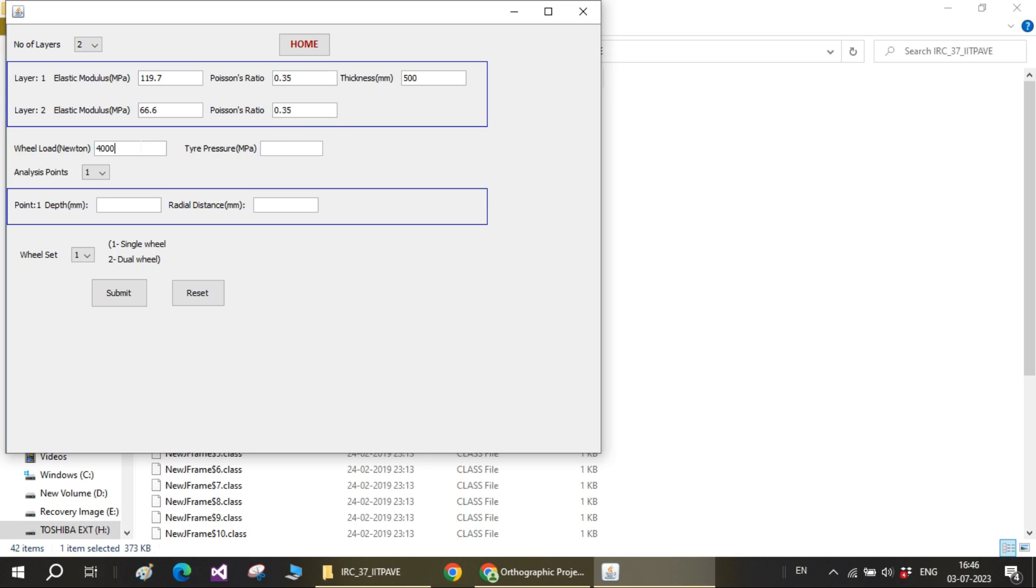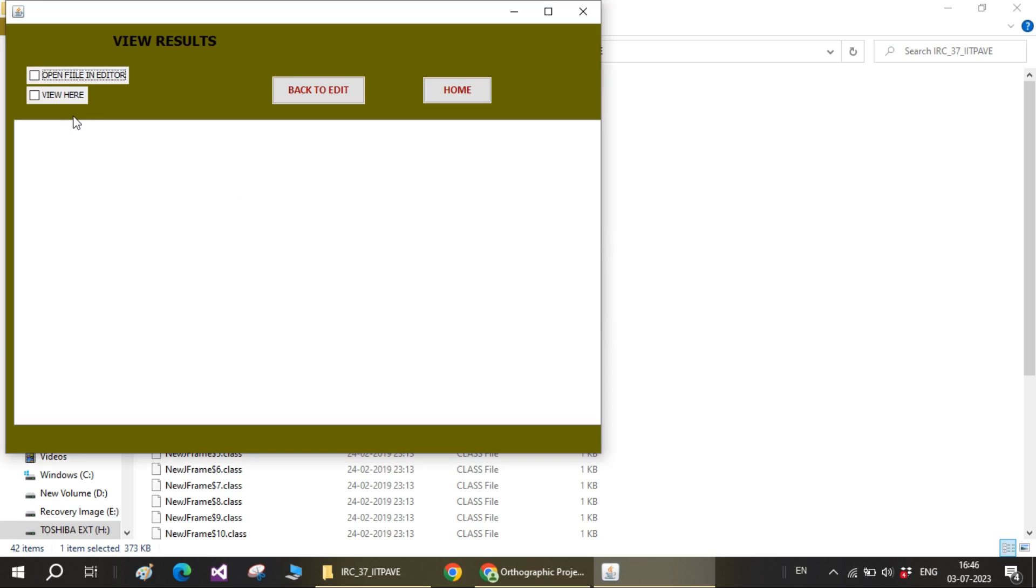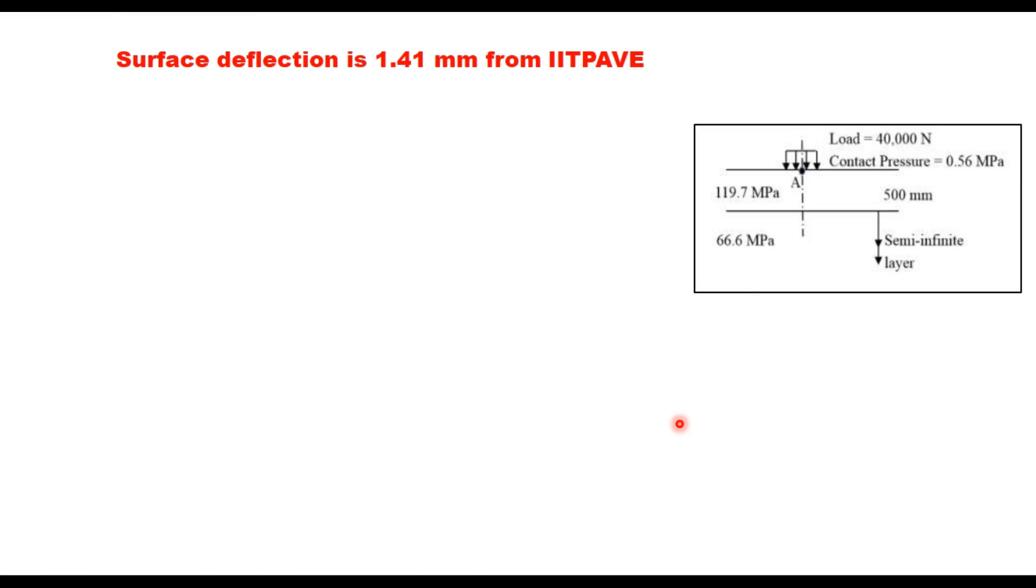Wheel load 40,000 and tire pressure is 0.56. You need only one analysis point here, that is below the load. So depth is 0 and radial distance is also 0, and put a single reload, submit the data. Now data has been submitted. Now run the program. It has been run and here you can see the output view here. So this is the displacement now. This displacement in Z direction, that is vertical direction at surface, 0.141 × 10^1. So 1.41 millimeter. So surface deflection as per IIT PAVE software is 1.41 millimeter for this structure, two layer structure.